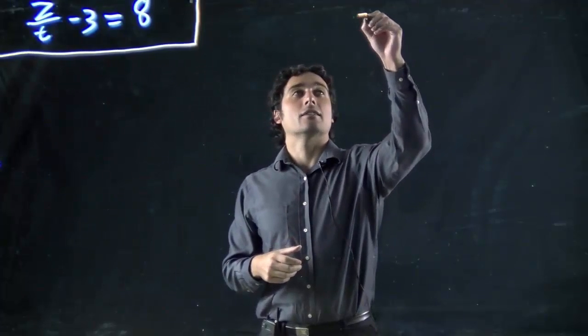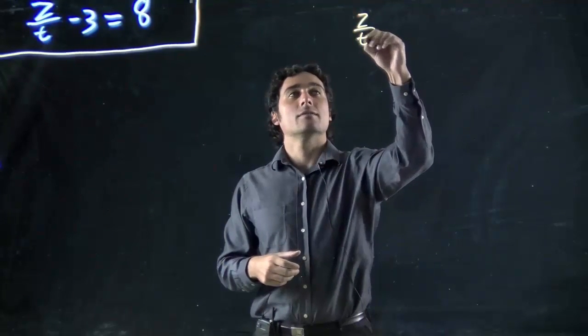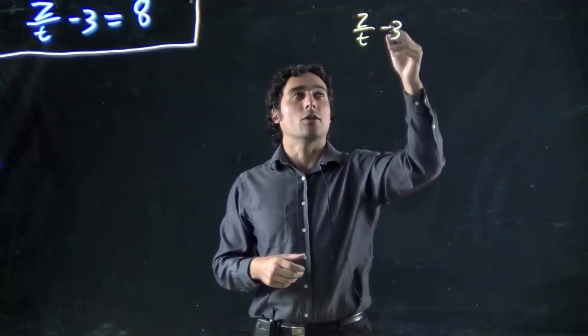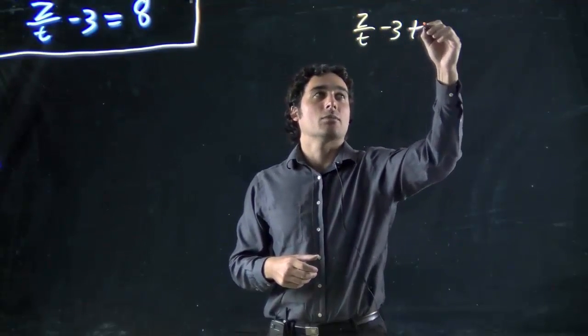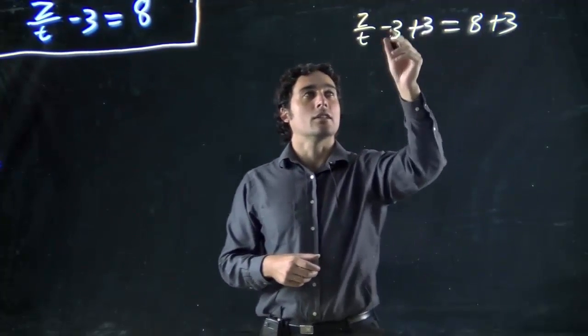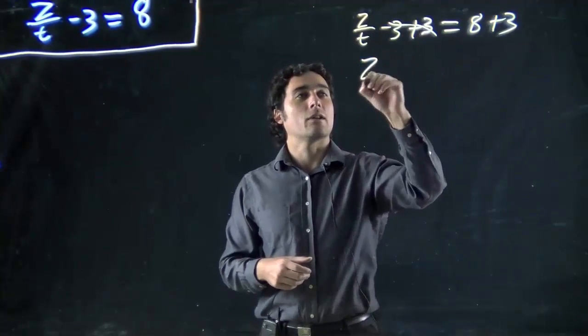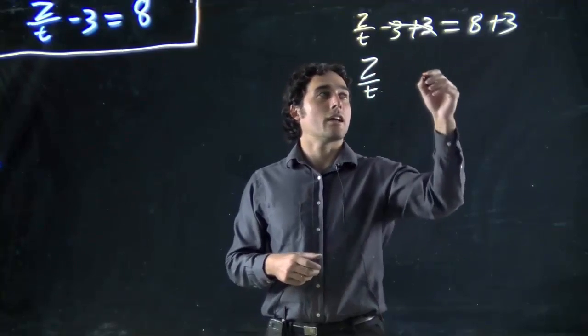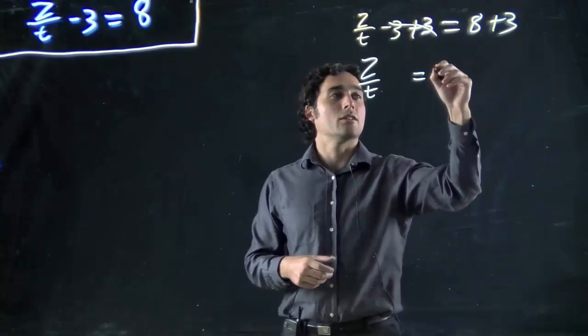So we've got z over t minus 3 and as always to get rid of a minus we add, so plus 3 and do that to the other side as well. 8 plus 3, so these go away and we're left with z over t and that's equal to 8 plus 3 or 11.